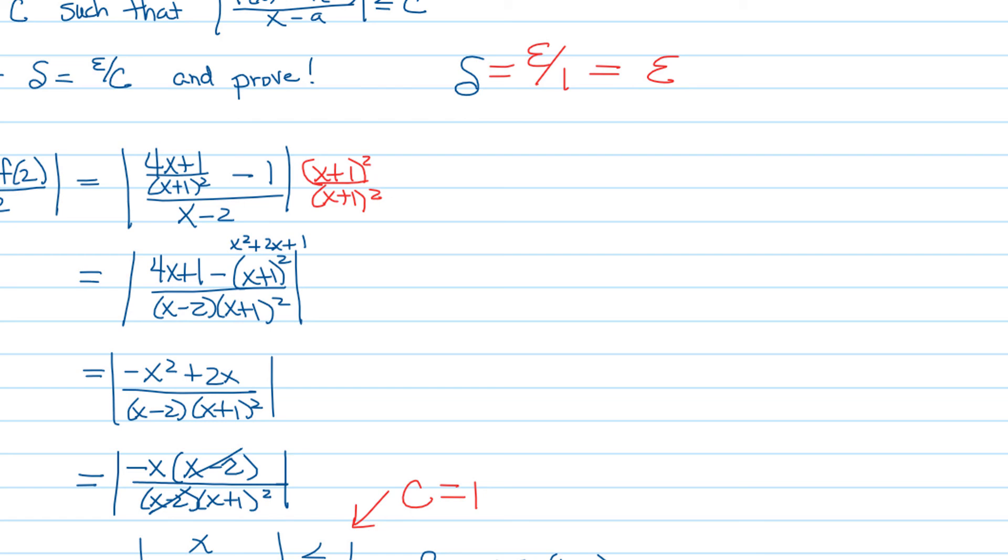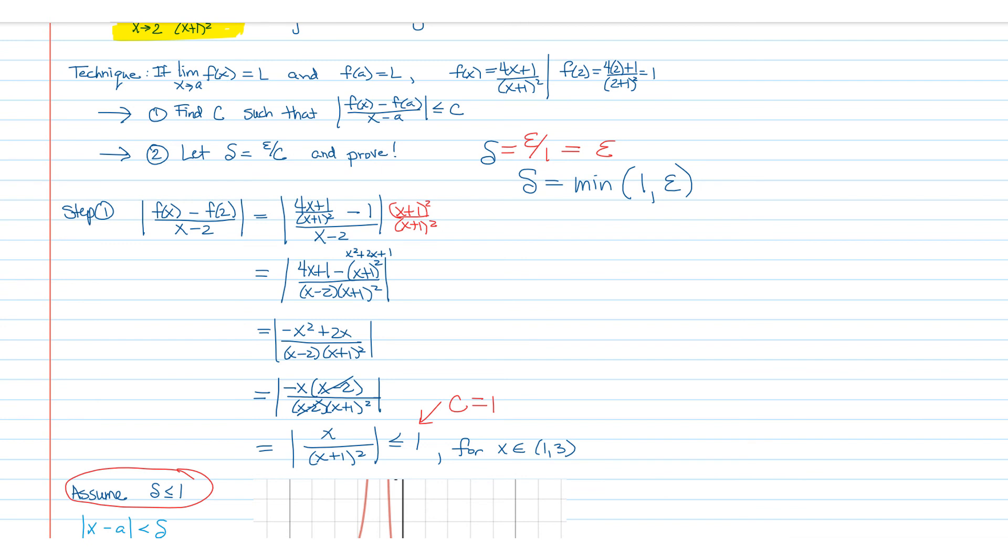ε can be any number greater than 0, and remember we're assuming that δ is less than or equal to 1. But that's actually not a big problem because what you can do is define δ to be the minimum of either 1 or ε, whichever is smaller. So we have found our δ and now we're going to use that to write out our proof.